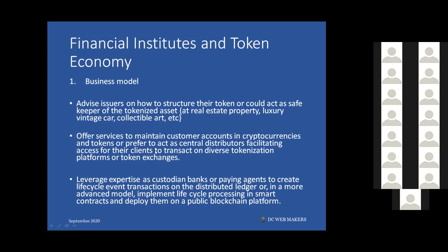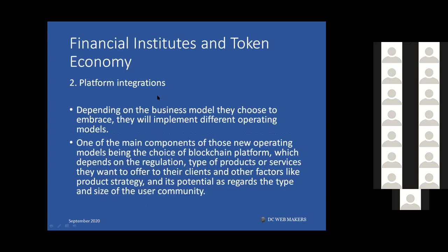You need to decide what platform to use for tokenization, and who is going to be the custodian bank, the paying agent, or the lifecycle creator. All the factors we discussed in the value chain need to come together in a life cycle — what happens when someone buys and when the secondary market opens. Everything needs to come together in a coherent business model for the asset you're dealing with.